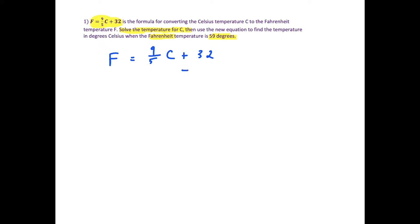We start by subtracting 32 on both sides. The goal is to isolate the variable C, so we have F minus 32 equals 9/5 times C. Then to solve for C, we multiply both sides by the reciprocal 5/9.